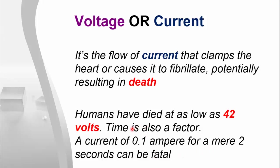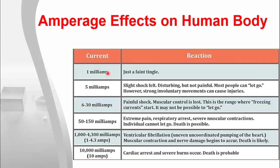In this table, we will see the amperage effect on the human body. As soon as 1 mA starts to flow through the body, we will experience a faint tingle — this current starts to flow when we touch a voltage level up to 30 volts. As voltage increases, the amount of current flowing into the body also increases, and the effect on the body increases as well. At 50 to 150 milliamps, it will cause extreme pain, respiratory arrest, or death. At 10 Ampere, death is probable.